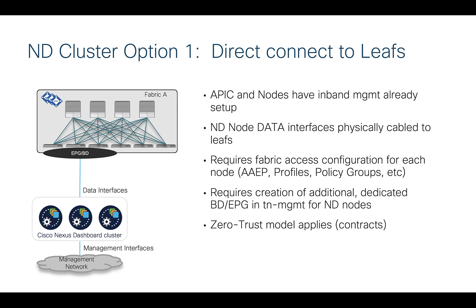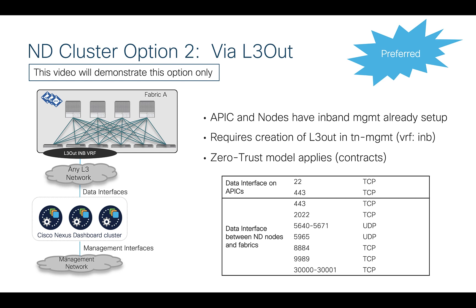In the direct-connect option, you'll create a dedicated bridge domain and EPG inside Tenant Management, in the in-band VRF, for those nodes to live. Just like any other EPG situation, the zero-trust model applies — you'll need filters and contracts that allow the Nexus Dashboard data interfaces to talk to the in-band IPs of the leaves, spines, and APICs. I'll show you what ports and protocols you need in the very next slide.